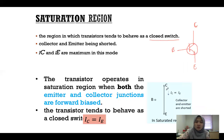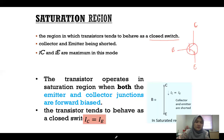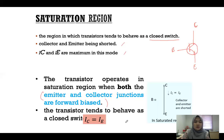A closed switch means the collector and emitter are shorted, so IC is basically equal to IE when the collector and emitter are shorted. IC and IE are maximum in this mode. The transistor operates in the saturation region when both the emitter and collector junctions are forward biased, and the transistor tends to behave as a closed switch where IC equals IE.